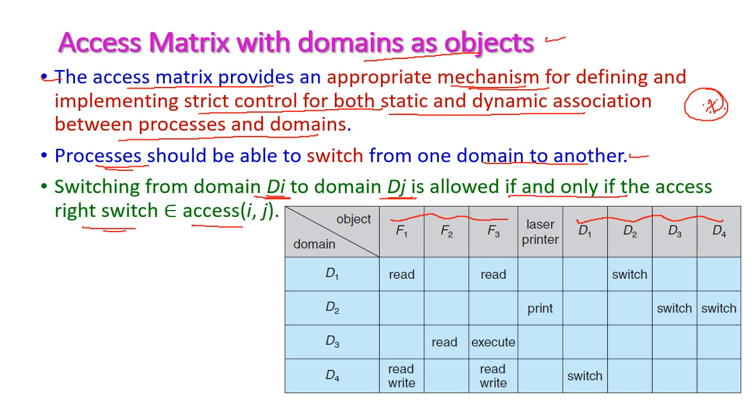For example, domain D1 has the switch access right, which means the objects available in domain D1 can be switched to domain D2 also. Domain D2 may also switch, meaning the process entered into domain 2 can also switch to domain 3 and domain 4.